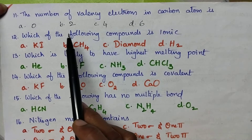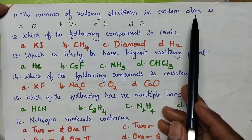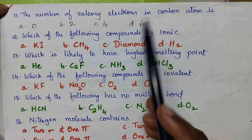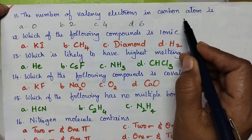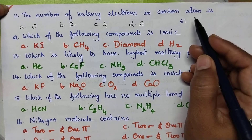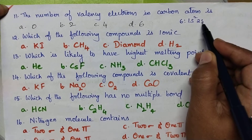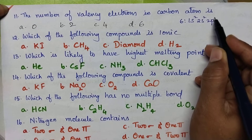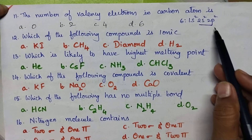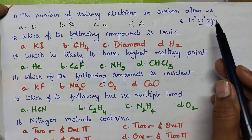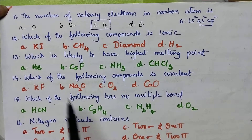The number of valence electrons in a carbon atom: the atomic number of carbon is 6, and its configuration is 1s², 2s², 2p². So the number of electrons present in the valence shell is 4, and hence option C is the right answer.